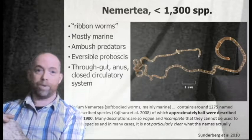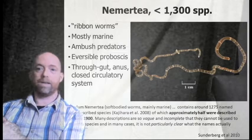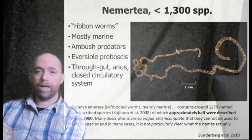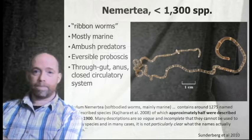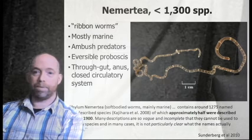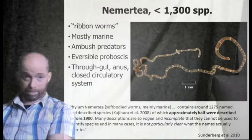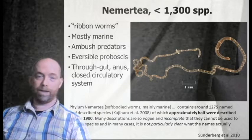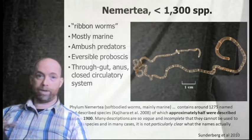We'll start with the nemerteans — the last of the spiralian groups. They're moderately diverse with about 1,300 species, mostly marine, and tend to be ambush predators with a characteristic reversible proboscis. Commonly called ribbon worms, the 1,300 species estimate is in dispute: approximately half were described before 1900, and as Schudenberg notes, many descriptions are so vague and incomplete they can't be used to identify species, and in many cases it's not clear what the names actually refer to.